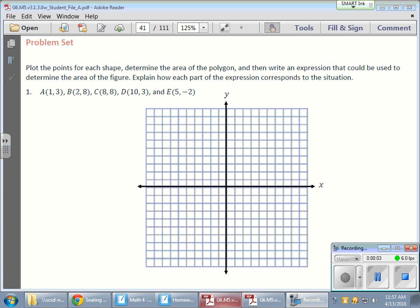OK, so in today's math lesson, what we're doing here is finding polygons inside of coordinate planes. And then we're using information to find the area of those polygons, which is pretty cool stuff. So let's see. Our question here says, plot the points for each shape, and then determine the area of the polygon, and then write an expression that could be used to determine the area of the figure. Explain how each part of the expression corresponds to the situation. OK, this sounds like a lot. But let's begin here.